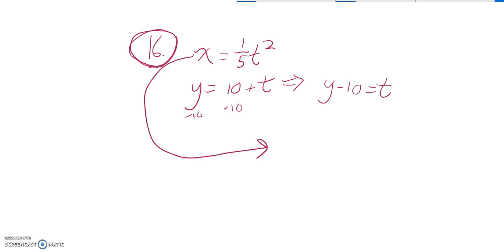So I'm going to plug that into this equation. I know that X is equal to 1 fifth times T squared, but T is just Y minus 10. So now I'm going to multiply this out a little bit. I'm going to square that Y minus 10. So that would be Y squared, careful here, minus 20Y plus 100.